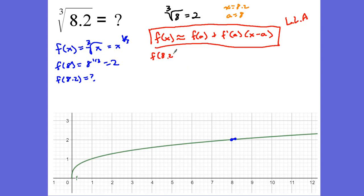That's our a, a for approximation. We're going to use that to approximate it. So let's plug in. f of 8.2, which is what I'm trying to find, is roughly equal to f of 8. We know that. I found it here. f of 8 is equal to 2. Plus f prime of 8, 8.2 minus 8.